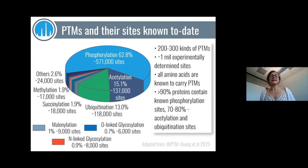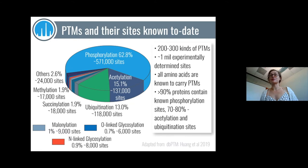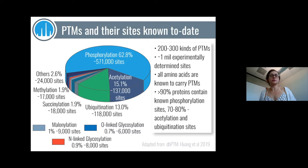As of 2019 data — so there are probably even more now — there are about 200 to 300 kinds of known PTMs. Every amino acid is known to carry at least one PTM, and for some like lysine, there are probably close to a hundred. There are at least one million experimentally determined PTM sites. The majority, as shown in this pie chart, are sites of phosphorylation, but other major PTMs like acetylation, ubiquitinylation, and succinylation also represent thousands of sites.